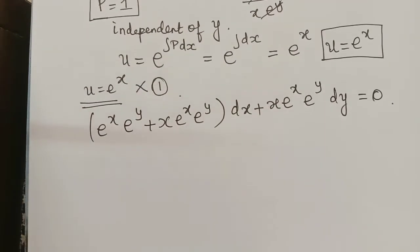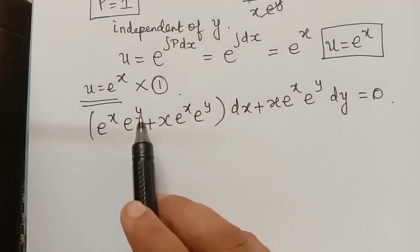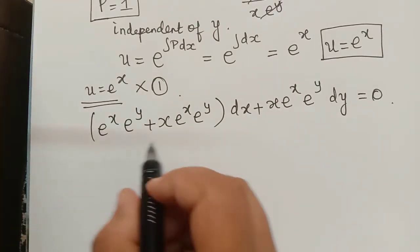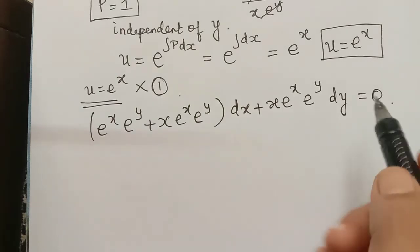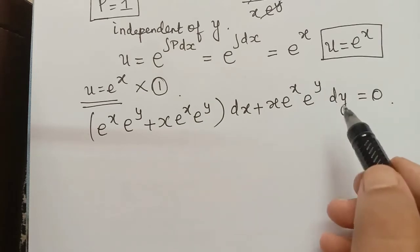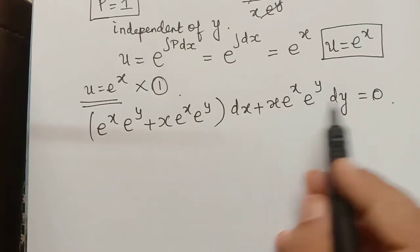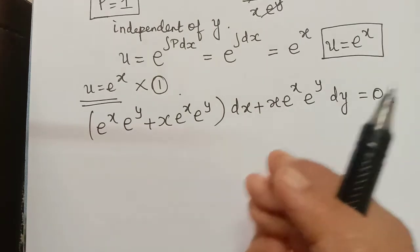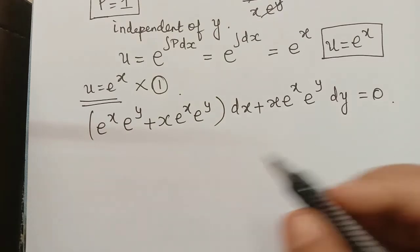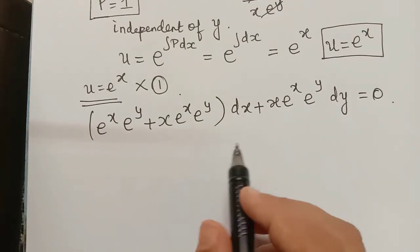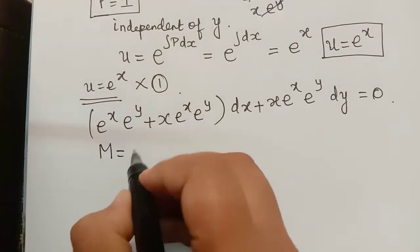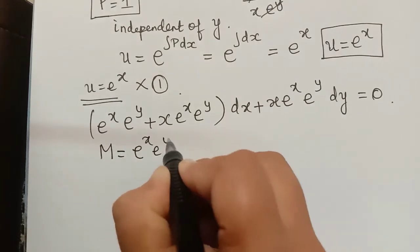After finding the integrating factor, we could divide this equation throughout by x·e^x·e^y and solve by variable separable method, or we can check the exactness of the new equation. We will proceed with the exactness method.